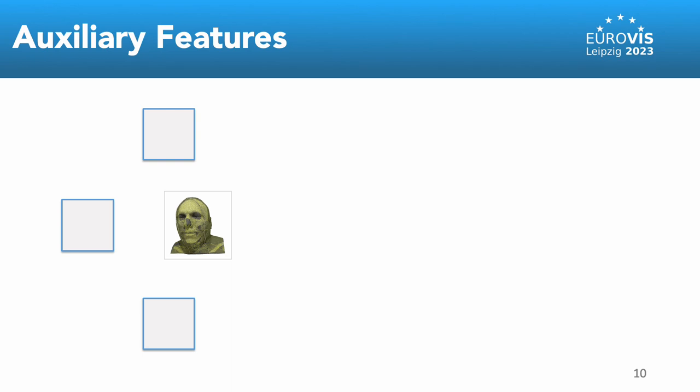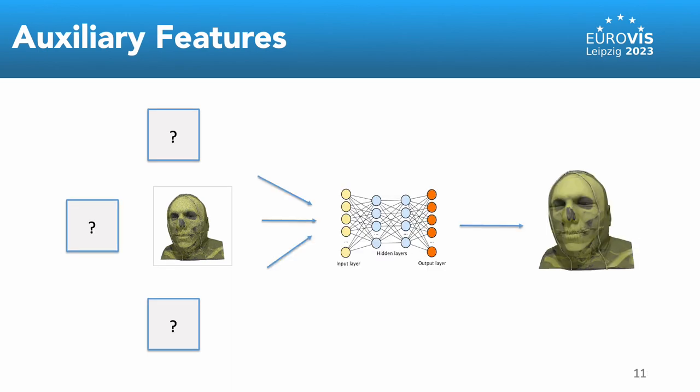For the surface-based interactions, additional features from the renderer played an important role in the effectiveness of the denoising methods. So we asked the question what should these additional features be in the case of volumes that when given as input to the neural denoiser, the network learns to remove noise from the image.